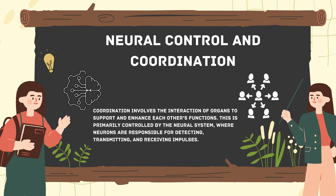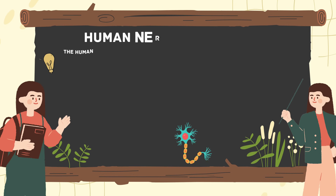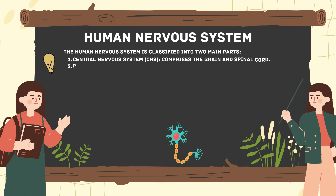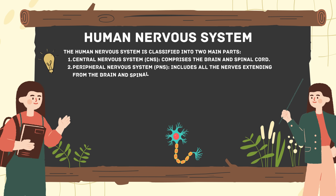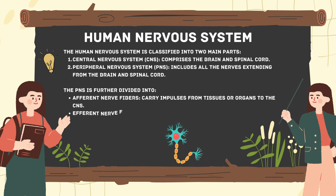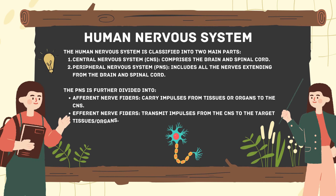The human nervous system is classified into two main parts. The central nervous system (CNS) comprises the brain and spinal cord. The peripheral nervous system (PNS) includes all the nerves extending from the brain and spinal cord. The PNS is further divided into afferent nerve fibers, which carry impulses from tissues or organs to the CNS.